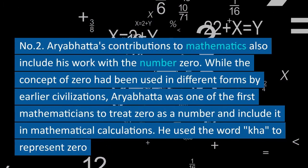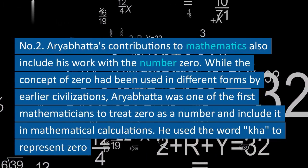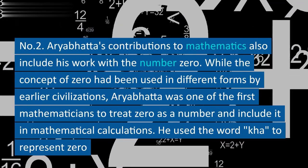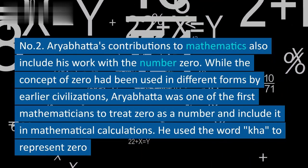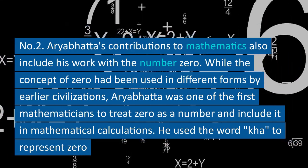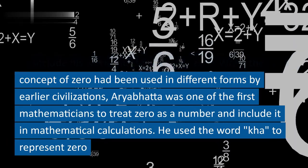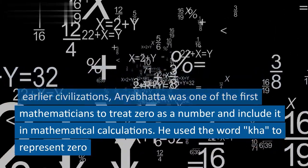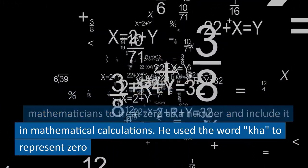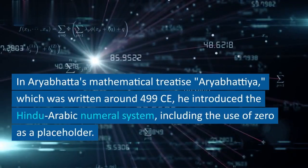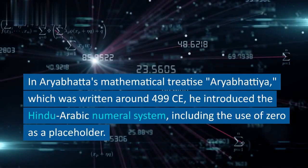Number 2. Aryabhata's contributions to mathematics also include his work with the number zero. While the concept of zero had been used in different forms by earlier civilizations, Aryabhata was one of the first mathematicians to treat zero as a number and include it in mathematical calculations. He used the word 'sunya' to represent zero.